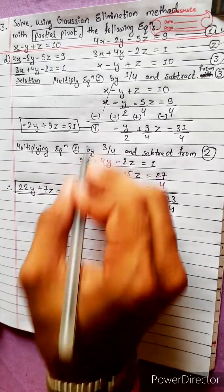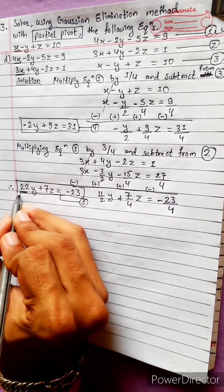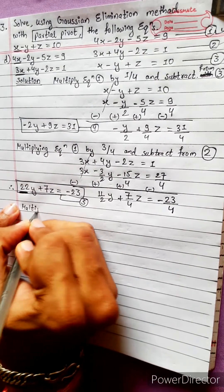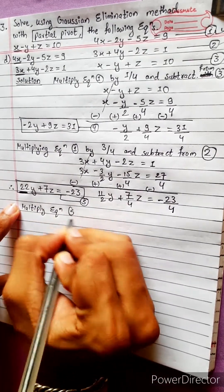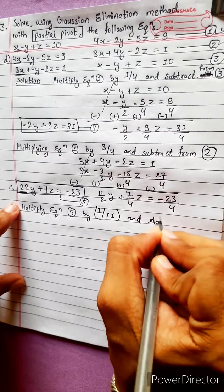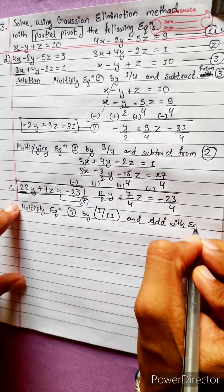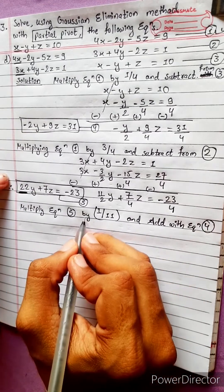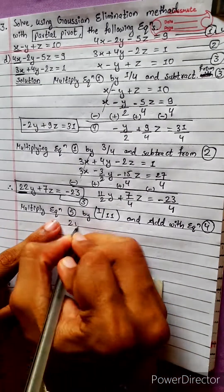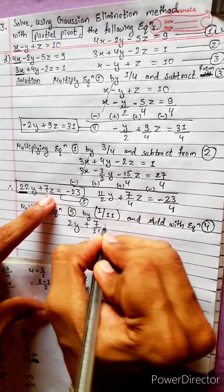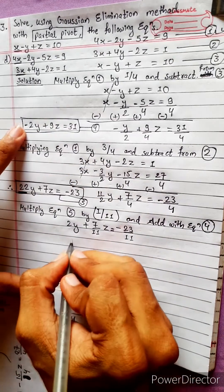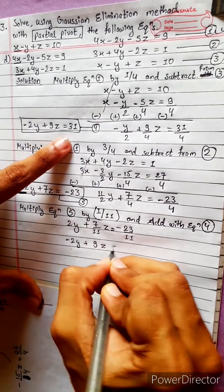Now solving Equations 4 and 5. Equation 5 has the larger coefficient (22), so multiply Equation 5 by 1/11 and add to Equation 4. Equation 5 divided by 11: 2y plus 7/11 z equals minus 23/11. Equation 4 as it is: minus 2y plus 9z equals 31.